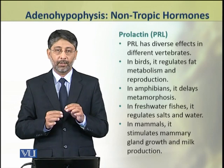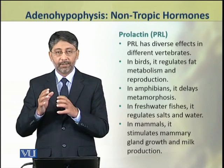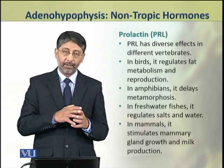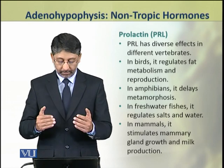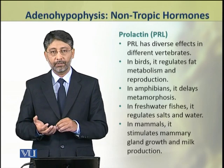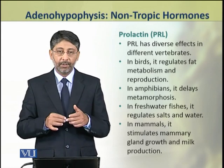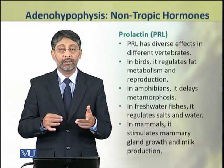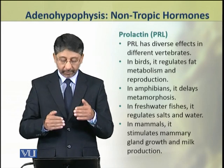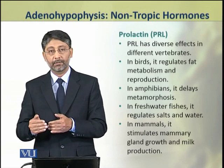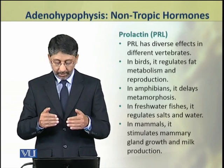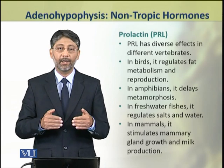Prolactin has diverse effects in different vertebrates. In birds, it regulates fat metabolism and reproduction. In amphibians, it delays the process of metamorphosis. In freshwater fishes, it regulates salt and water concentration. While in mammals, it stimulates mammary gland growth and milk production.